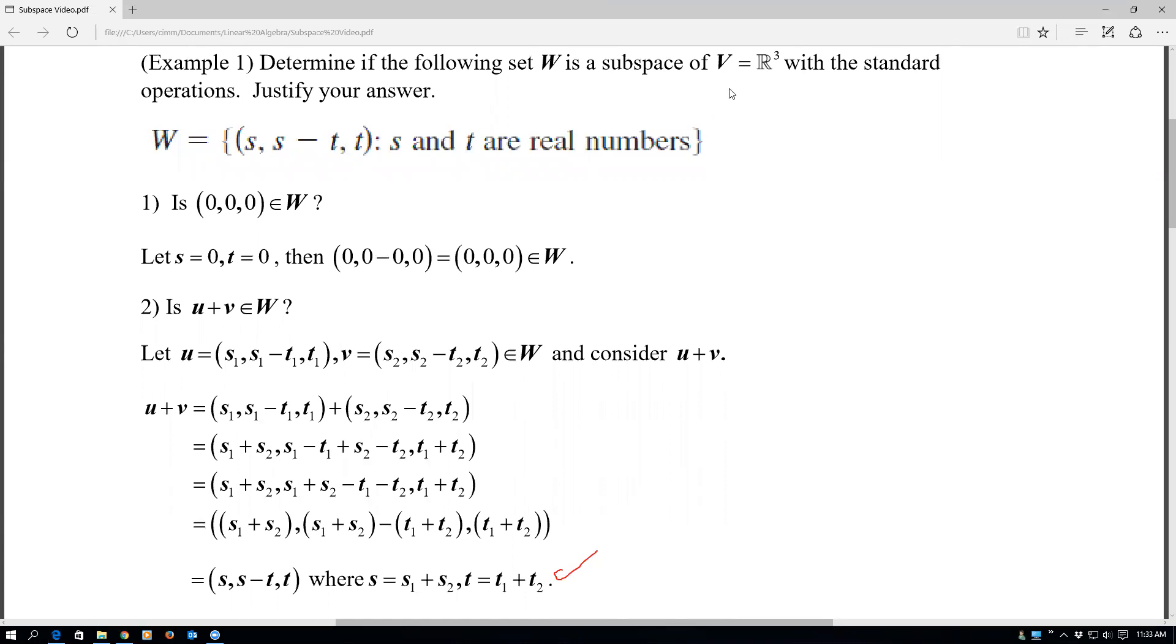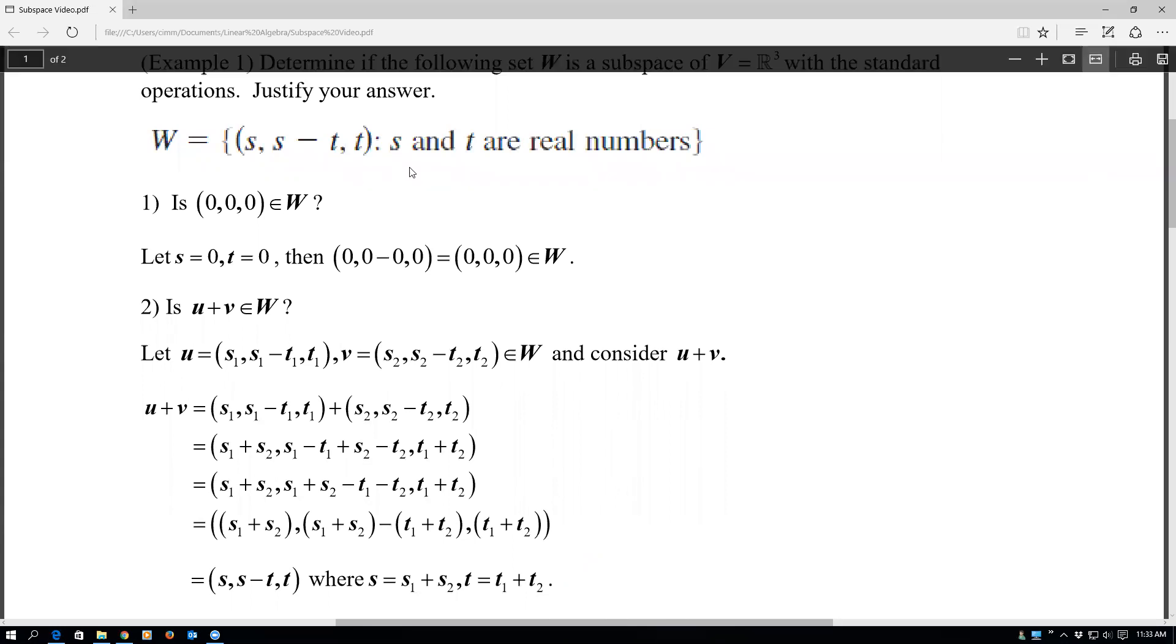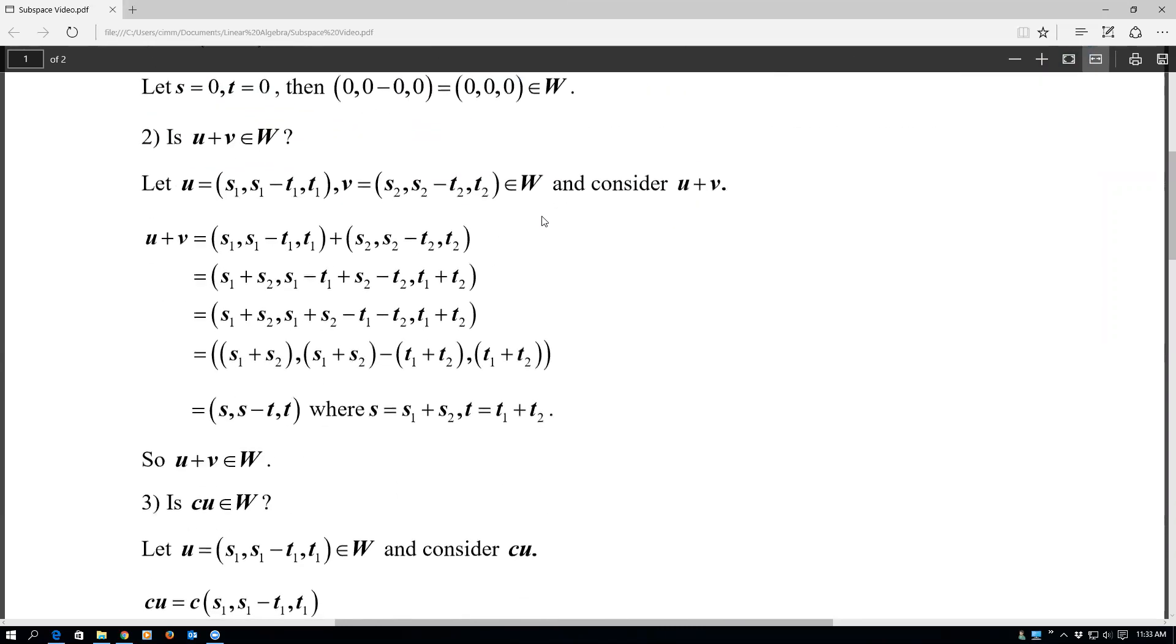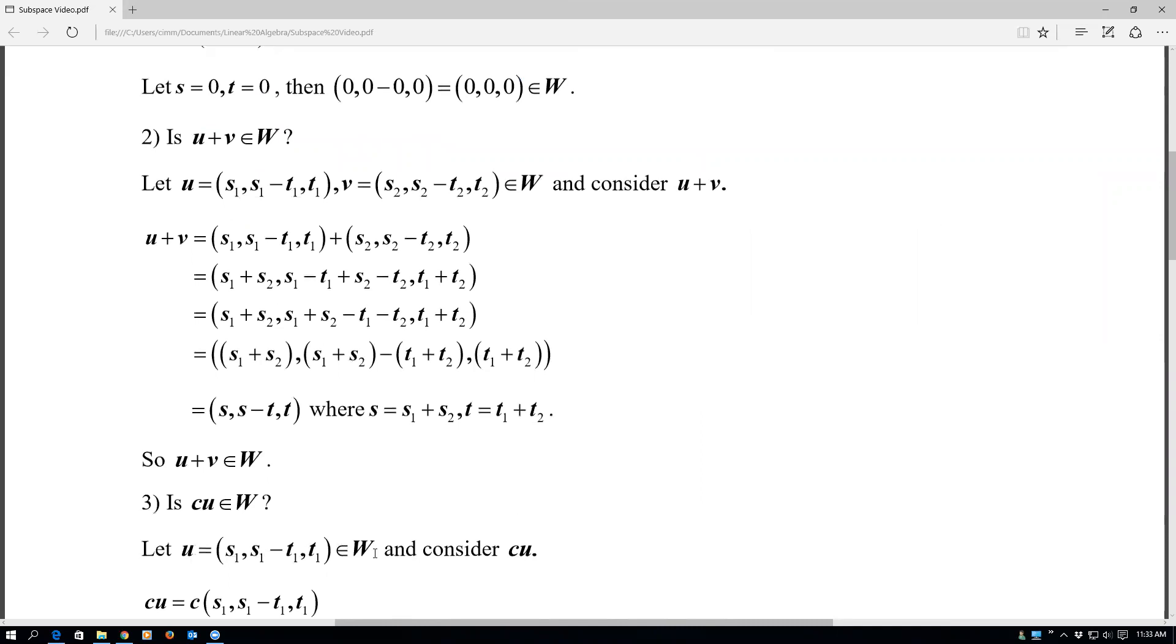So the last thing I'm going to show is going to be this scalar multiplication. So if U is in there and C is a scalar, then show the scalar multiple's in there. That's step three. So again, I'm just going to let U equal that same thing, and it's going to be in W. So I'm going to consider CU.